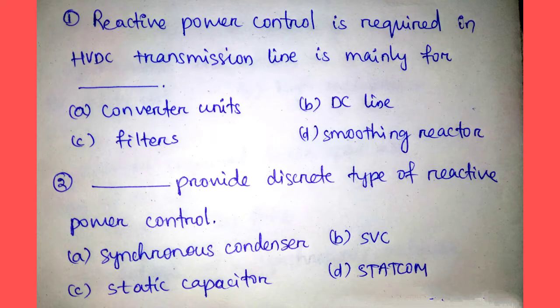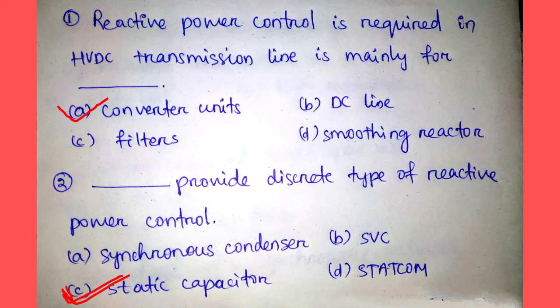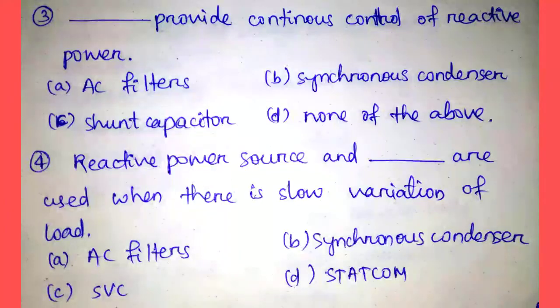The correct answer is Option A, converter units. Question number two: Which provides discrete type of reactive power control? Option A: synchronous condenser, Option B: SVC, Option C: static capacitor, Option D: STATCOM. The static capacitor provides discrete type of reactive power control.